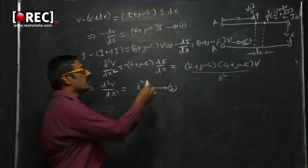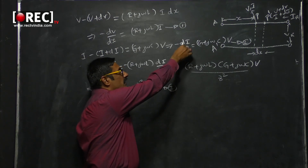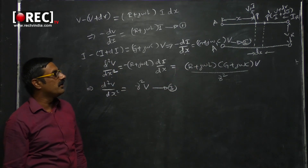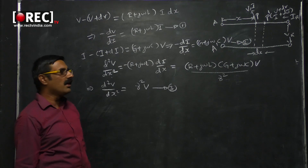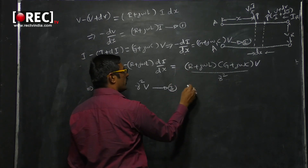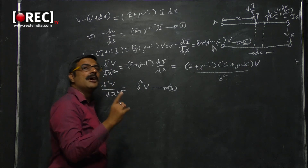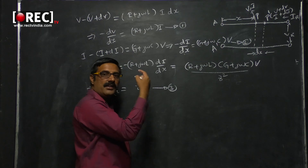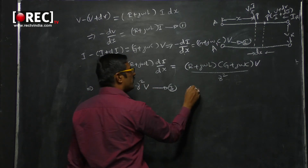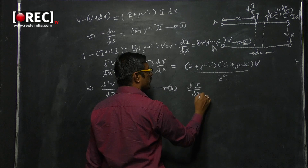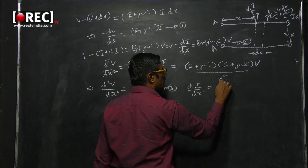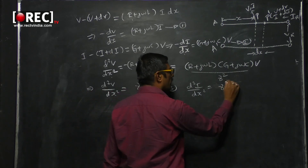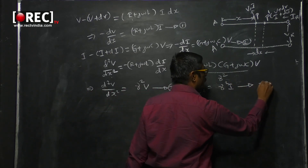By a similar analysis — differentiating equation two with respect to x — d²I/dx² equals (G + jωC) times dV/dx. Replacing dV/dx from equation one with minus (R + jωL) times I, we arrive at d²I/dx² equals (R + jωL)(G + jωC) times I, which equals γ²I. This is equation number four.